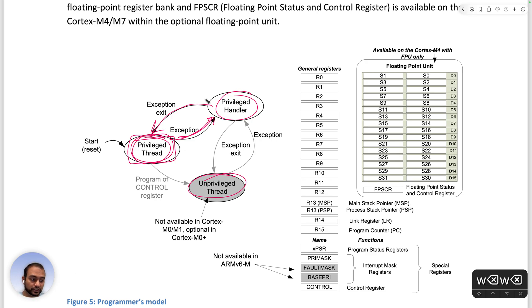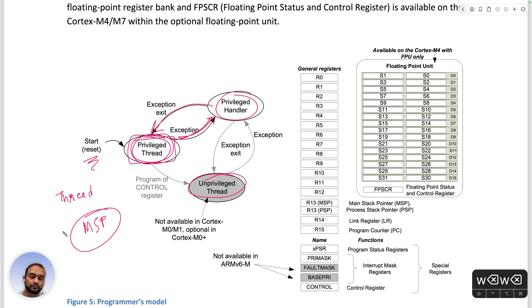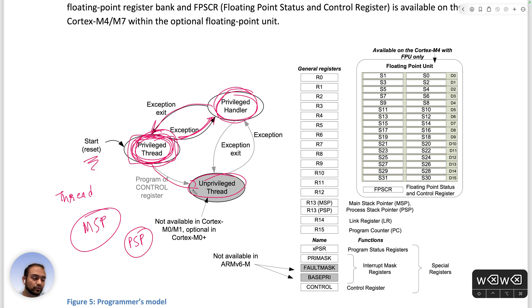When the CPU starts, the stack pointer it uses is called the MSP. In handler mode and in privileged thread mode, we start off with MSP. In privileged thread mode, we can change the stack pointer to PSP. When we move to unprivileged thread mode, PSP would be used. Anytime an exception happens and we go to handler mode, the handler mode always uses MSP.